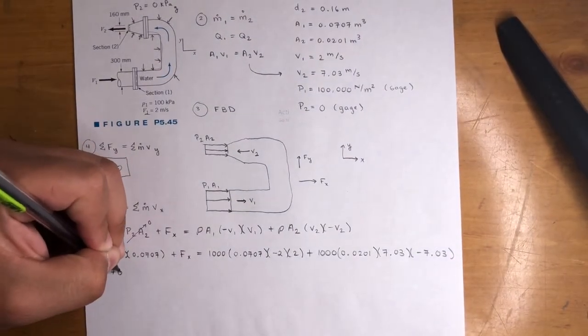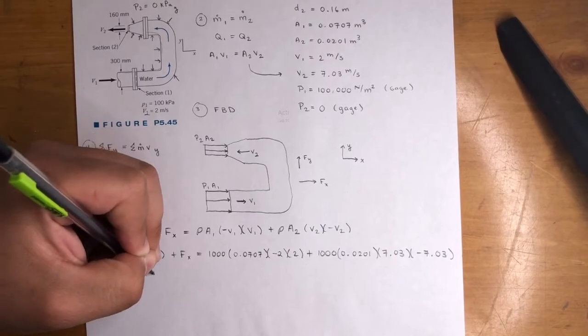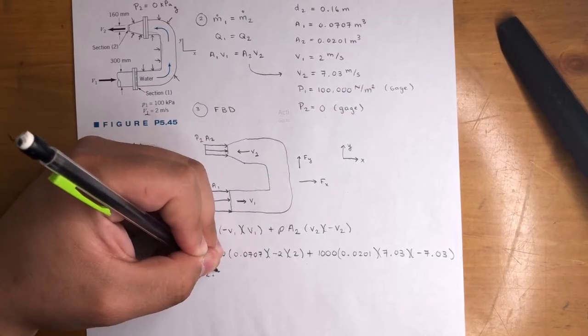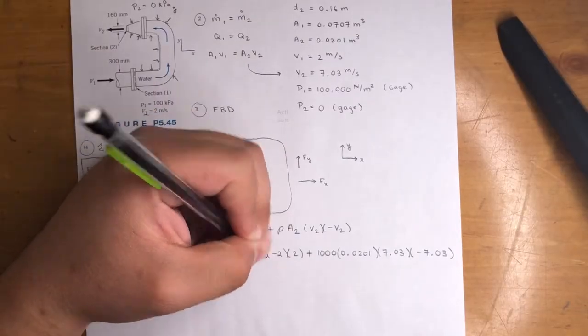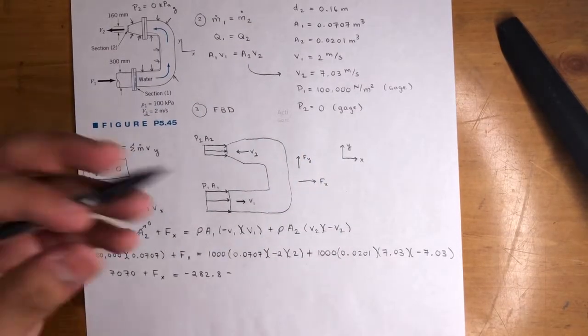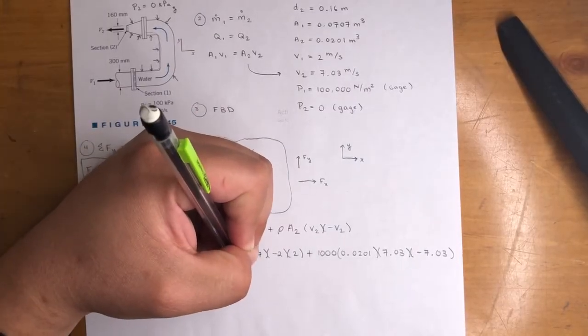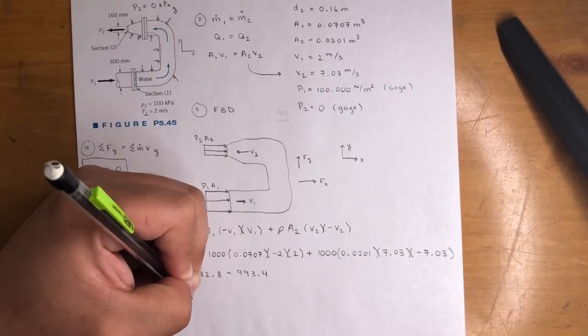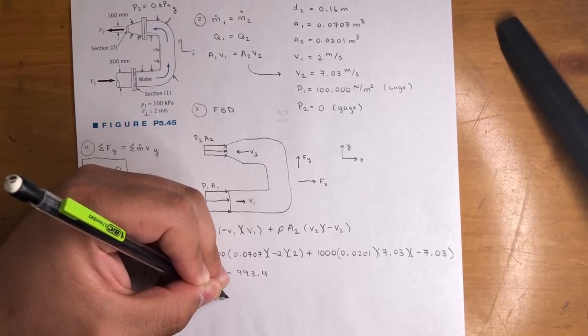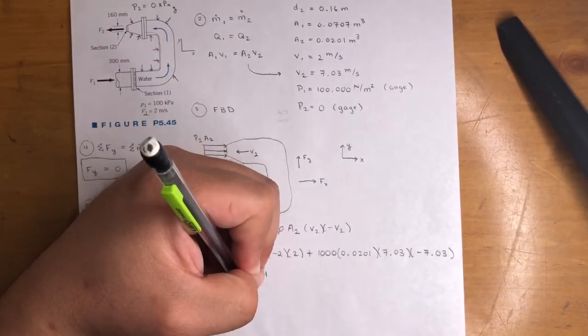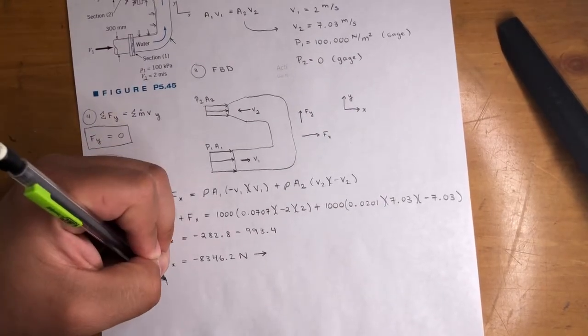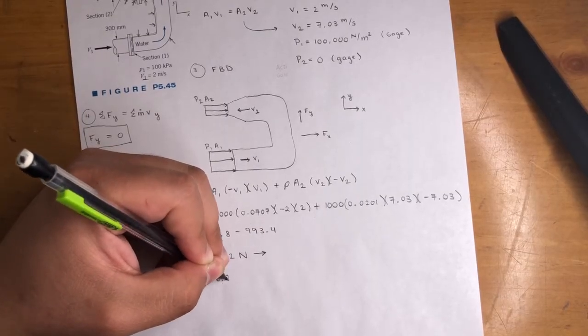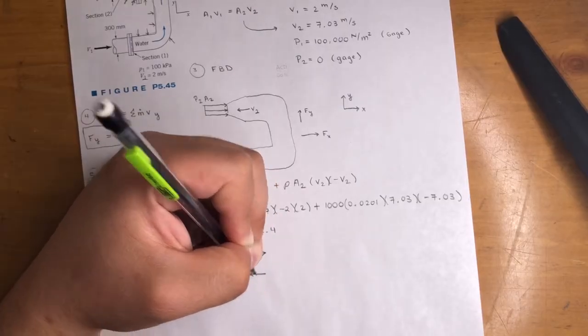So that's what the equation looks like. Multiply these out. You will get 7070 plus Fx equals, next term is negative 282.8 minus. This makes it a negative. This makes it a negative. Two negatives minus 993.4. That means your Fx is negative 8346.2 newtons. We assumed it in the positive, so like this. Or you could also write Fx equals positive 8346.2 newtons in the negative x direction. Both those answers are right. But again, just make sure you're consistent with these signs, and you'll be alright.